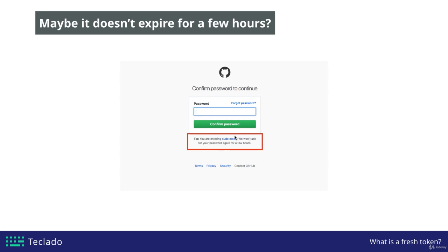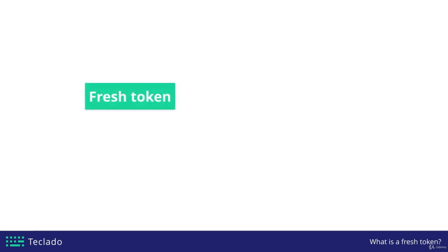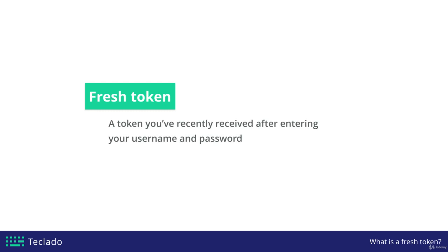We can replicate that using Flask JWT Extended by allowing our tokens to live for a few hours. We'd keep a fresh token for a few hours, then refresh and no longer have a fresh token. The next time the user wants to do something critical, we'd ask for their password again to get another fresh token and revalidate that the user is who they say they are. To recap: a fresh token is one you received after entering your username and password. A non-fresh token is one you received by refreshing a previous token. We'll look at how to implement refreshing in the next couple of videos, so stay tuned.